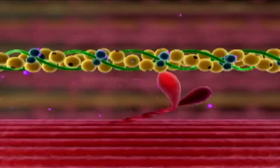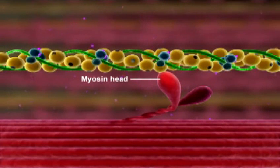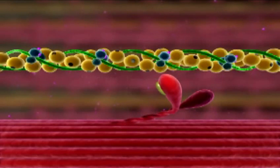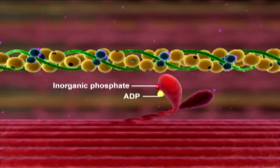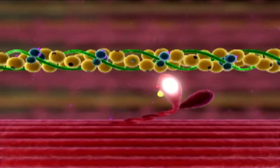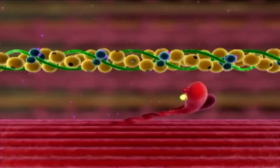Also note that the myosin head must be activated before a crossbridge cycle can begin. This occurs when ATP binds to the myosin head and is hydrolyzed to ADP and inorganic phosphate. The energy liberated from the hydrolysis of ATP activates the myosin head, forcing it into the cocked position.